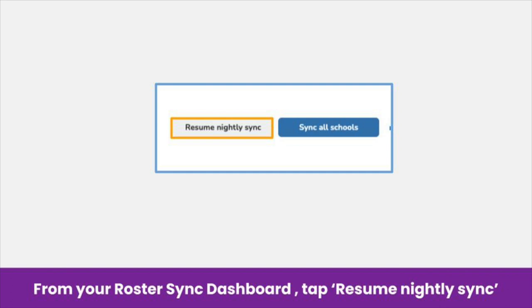If the majority of your data is changing, you may need to also tap Sync All Schools to run a full sync. A full sync will make sure your data in Seesaw matches exactly what is being shared in Clever or Classlink. If you have any questions about running a full sync, please reach out to Seesaw support.